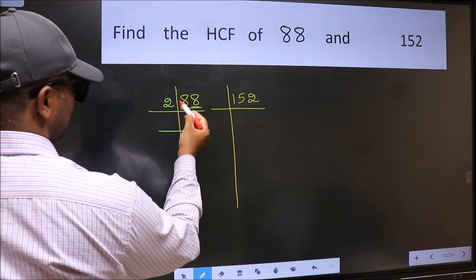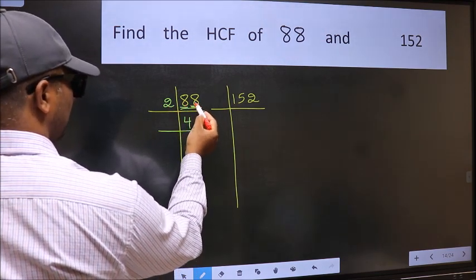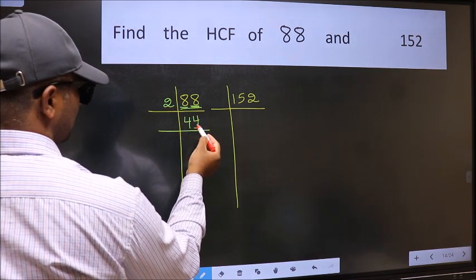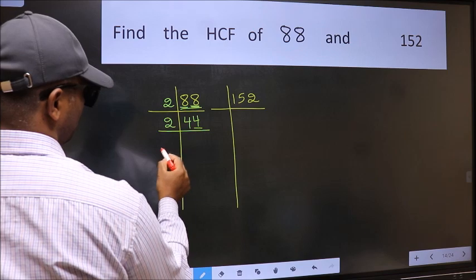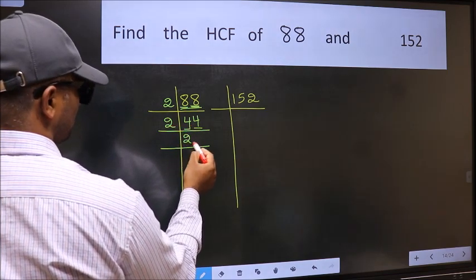First number 8, when do we get 8 in 2 table, 2 fours 8. The other number 8, when do we get 8 in 2 table, 2 fours 8. Now last digit 4 is even, so take 2. First number 4, when do we get 4 in 2 table, 2 twos 4.